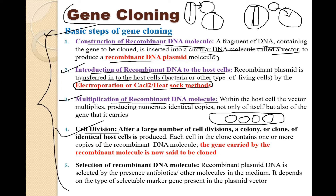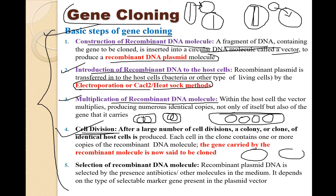After multiplication of the recombinant DNA is done, cell division takes place. Division of the host cells occurs, giving us two host cells, each containing many recombinant DNA molecules. This fourth step involves the entire host cell dividing into two identical forms, both containing the recombinant DNA molecules.